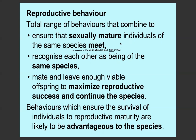These individuals have to recognise each other as being of the same species, so that they know they can mate and produce fertile offspring, then they have to actually mate, and they have to leave enough offspring that is viable so that it will live and produce more offspring of their own. That maximises the reproductive success of the species. Any behaviours which ensure the survival of individuals all the way to reproductive maturity are likely to be advantageous to the species, because they carry on the species.